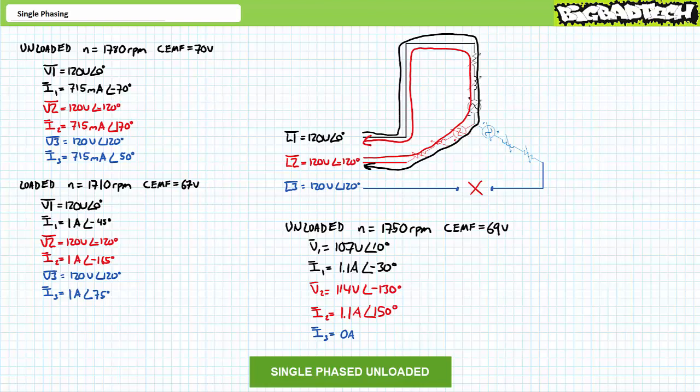Winding one experiences 107 volts at an angle of 10° and draws 1.1 amps at an angle of -30°. Winding two experiences 114 volts at an angle of -130° and draws 1.1 amps at an angle of 150°. Although no current travels through winding three, it still experiences 69 volts of counter-electromotive force while the motor is still running. This is the effect observed in the earlier hands-on demonstration — although there was a loss of connection to phase L3, winding three still experienced counter-electromotive force, just like all other windings while the motor is in operation.